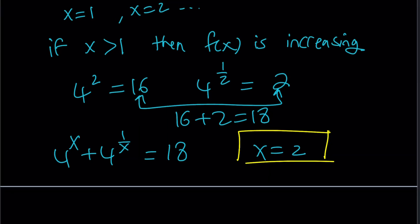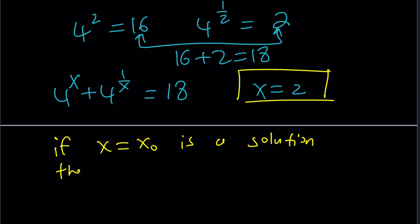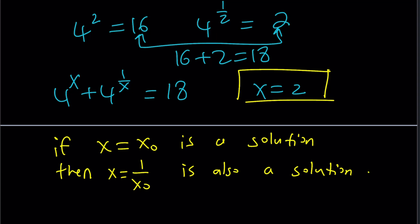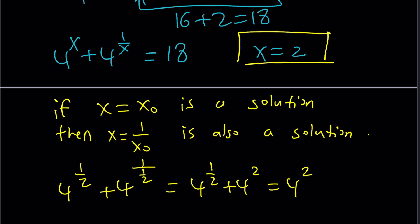Because this equation is symmetrical due to the presence of x and 1 over x at the same time, if x sub 0 is a solution, then 1 over x sub 0 is also a solution. So if x equals 2 satisfies the equation, x equals 1 half — the reciprocal — also satisfies it, because 4 to the power of 1 half plus 4 to the power of 2 is the same as 4 to the power of 2 plus 4 to the power of 1 half, which equals 18. So x equals 1 half is also a solution.